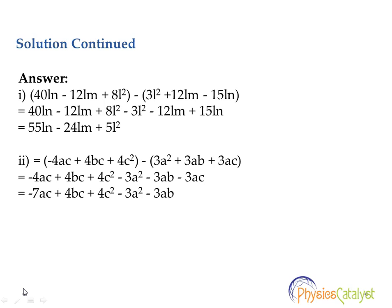Adding the individual terms, we get -7ac+4bc+4c²-3a²-3ab.